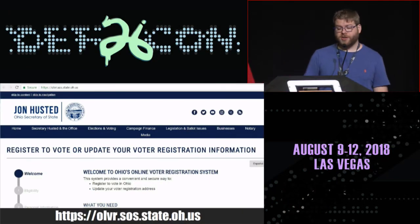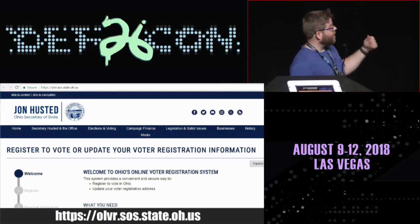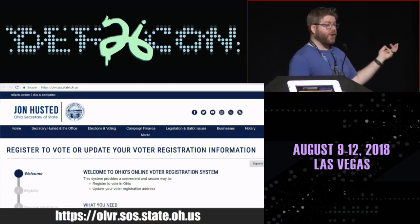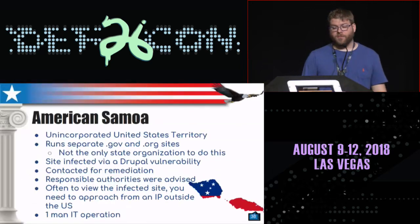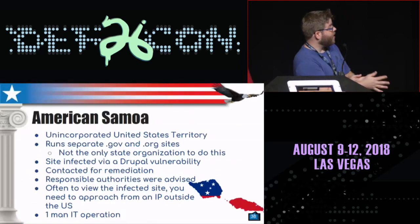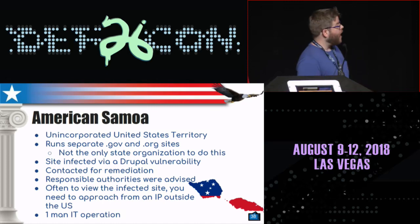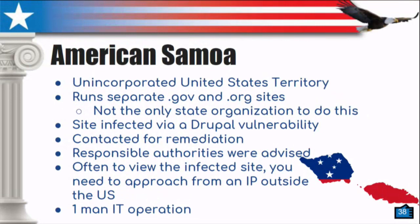This is what one of those voter registration systems looks like — honestly, they're just a web app. You basically put in information about who you are. There's basically knowledge-based authentication going on. This is how you register to vote in 37 out of 56 states and territories. Speaking of the 56 states and territories, American Samoa is an unincorporated U.S. territory. They actually run separate .gov and .org sites, which is fairly common — we don't know why. They were using Drupal and were affected by a Drupal vulnerability, and were distributing malware to all of the folks who came to their site.